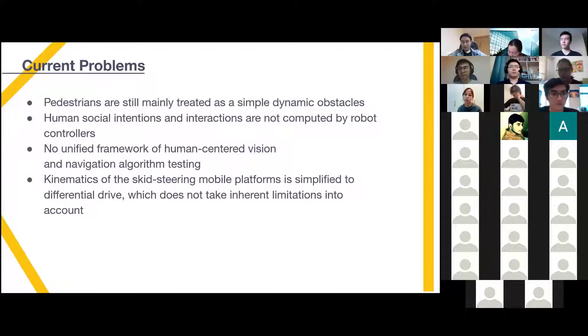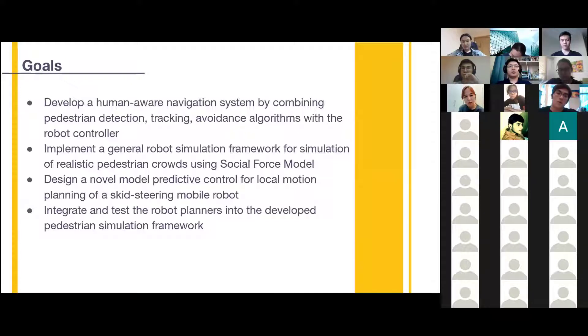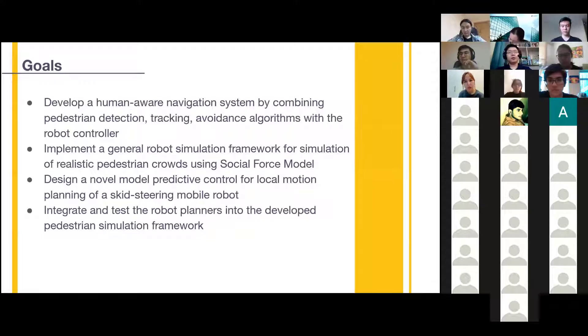Proceeding to the goals, based on the problems mentioned, the goals of this project are to develop a human-aware navigation system by combining pedestrian detection, tracking and avoidance algorithms with the robot controller. Secondly, implement a robot simulation framework in order to simulate realistic pedestrian crowds using social force model. Design a model predictive control for local motion planning of a skid steering mobile robot. And finally, integrate and test the robot planners into the developed pedestrian simulation framework.